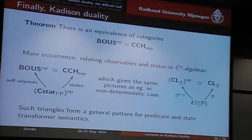You can draw similar diagrams for probabilistic computations using the distribution monad or other structures. The same fundamental structure occurs in quantum semantics, just like in non-deterministic semantics.